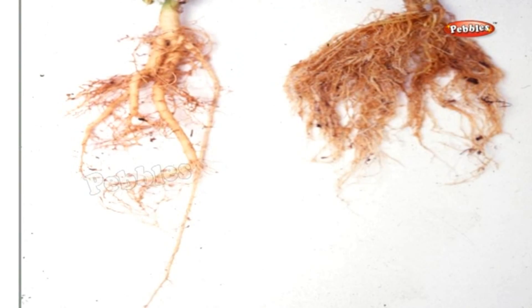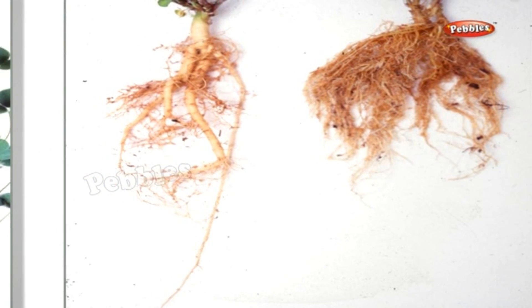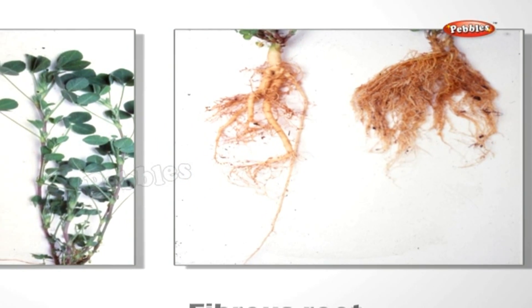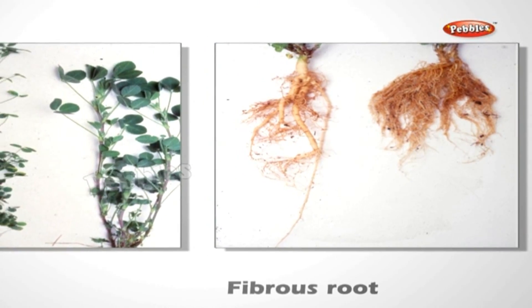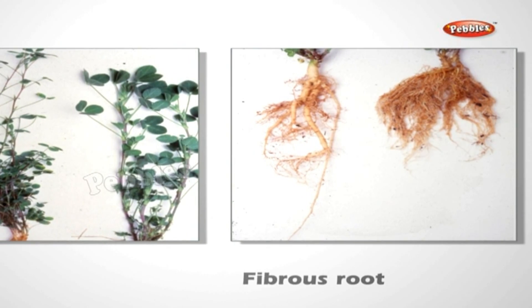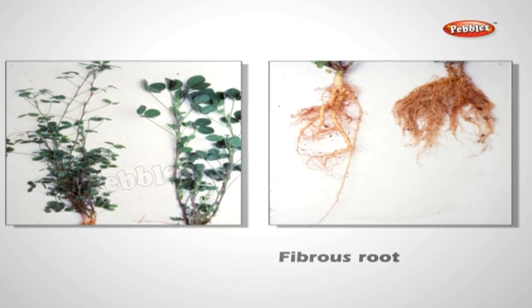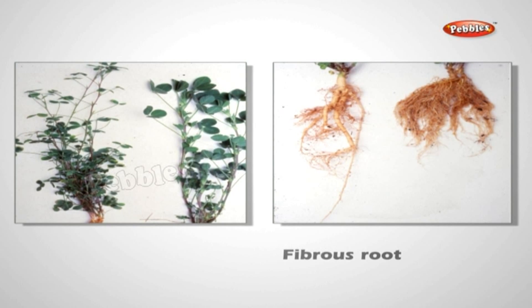In a grass plant, a number of thin, fiber-like roots arise from the base of the stem. They spread out in the soil and give support to the plant. These are known as fibrous roots. Maize, wheat, and barley are examples of plants that have fibrous roots. The two types of root system are the tap root system and the fibrous root system.